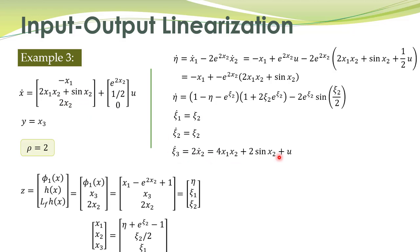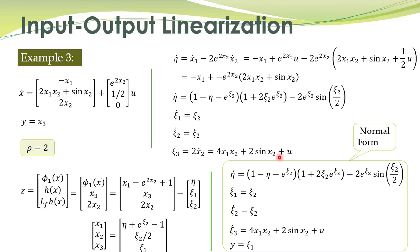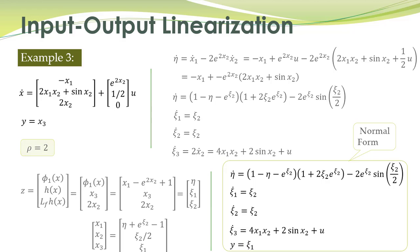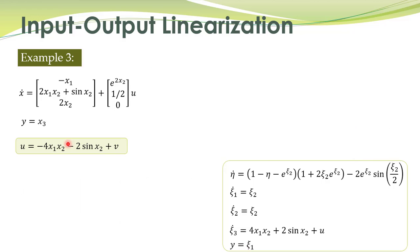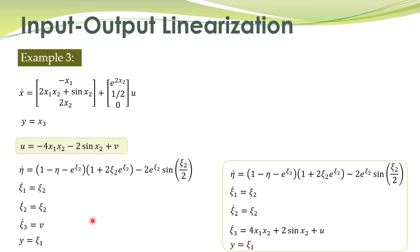So xi1 dot is equal to xi2, xi2 dot equals this expression, and the output in new state variables equals xi1. We have this system in normal form. Once we have this, we can obtain input-output linearization by defining the control input to cancel out the nonlinear terms.